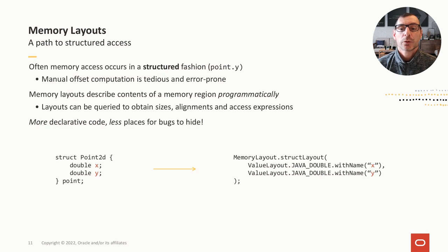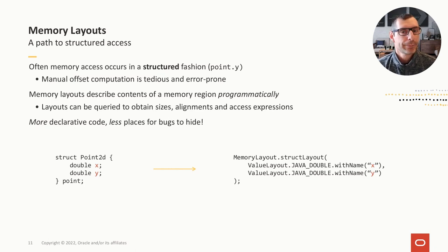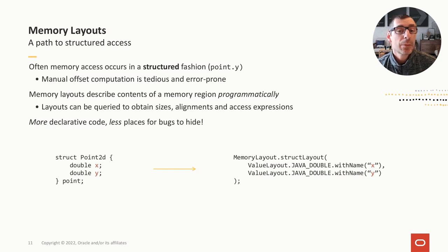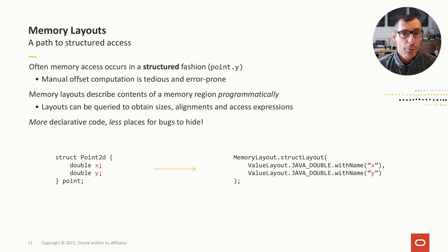In the previous example we accessed the Y coordinate of a Point struct — an example of what we call structured access, a very common operation when working with off-heap memory. One option is to perform offset computation manually, as we did before. While possible, this is tedious and error-prone. If the layout of the Point struct changes — a new coordinate is added or a type changes from double to float — some offsets and sizes in our program may become invalid, causing our program to fail.